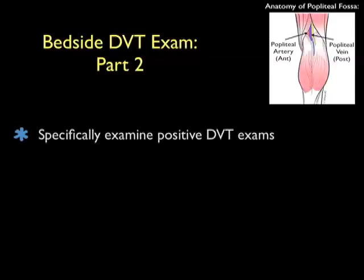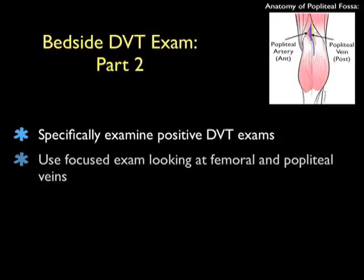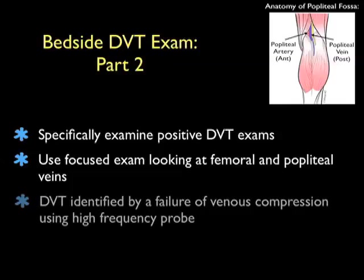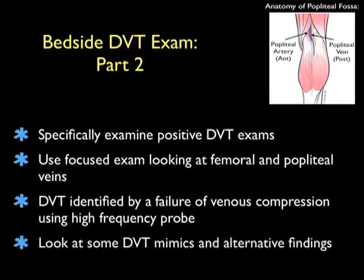Welcome back to SoundBytes Ultrasound and part two of the Bedside DVT Ultrasound Evaluation. Hopefully you've had a chance to complete part one of the module prior, looking at the normal anatomy of the leg veins and normal compression examination looking for a DVT. In this module part two, we'll specifically examine positive DVT examinations using the focused exam to look at the femoral and popliteal veins. A DVT will be identified by a failure of venous compression using the high-frequency probe. We'll wrap up the module by looking at some DVT mimics and alternative findings that you may encounter on bedside ultrasound examination of the leg.